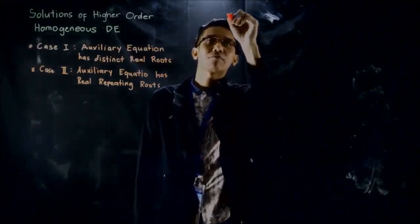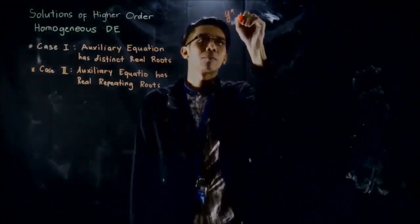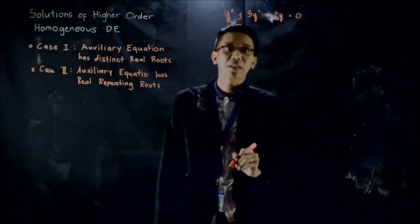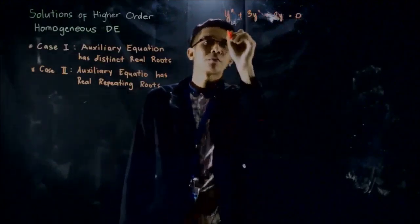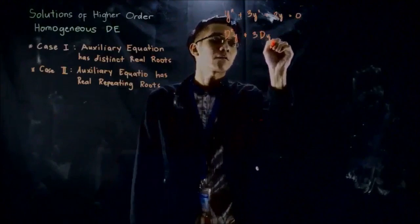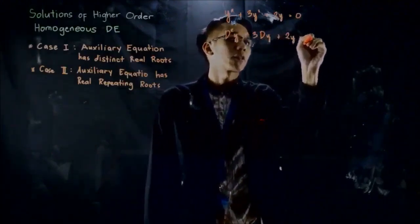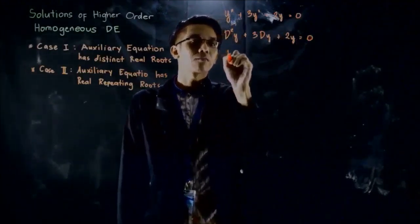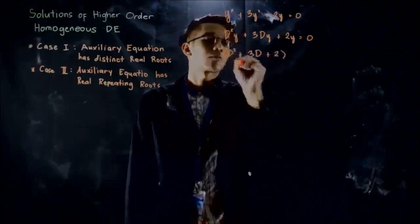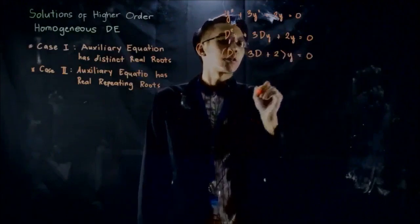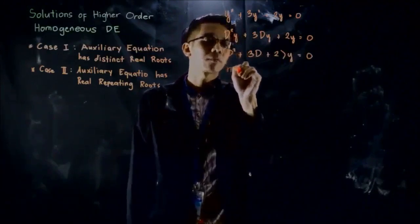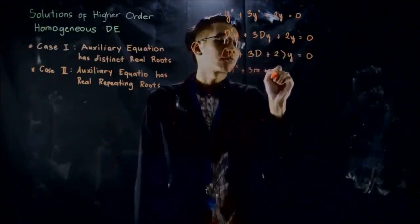Suppose we want to solve the differential equation y double prime plus 3y prime plus 2y equals 0. We can write it in operator form: the second derivative of y with respect to x, plus 3 times the first derivative of y with respect to x, plus 2y equals 0. Factoring out y gives us (D squared plus 3D plus 2)y equals 0. We can then write it in its auxiliary form: m squared plus 3m plus 2 equals 0.